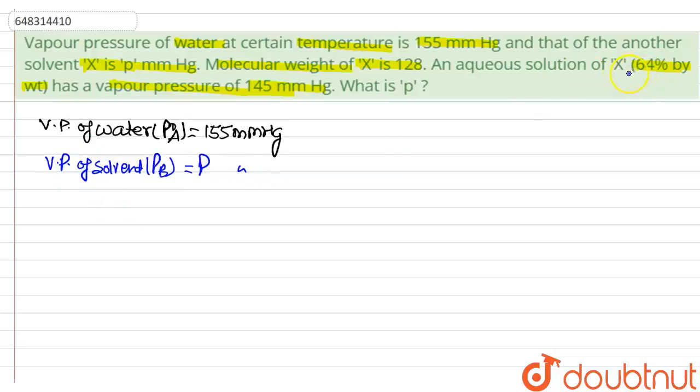In this question, a 64% by weight aqueous solution is taken. Let us consider 100g of aqueous solution. That means in this solution, the amount of solvent is 64g, and the amount of water is 36g.